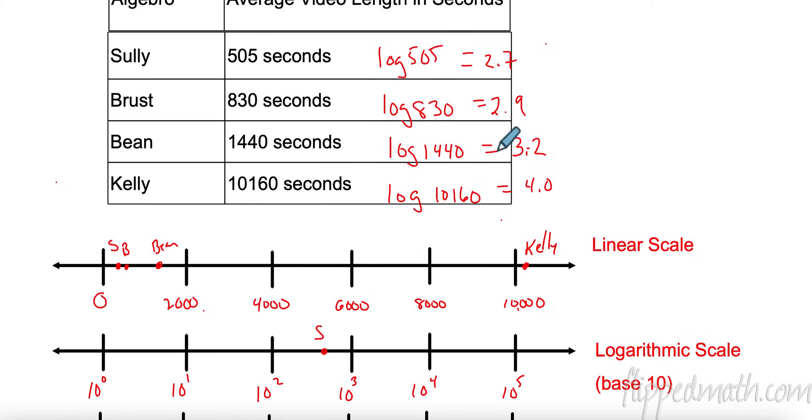Here we are. So log of 505 was 2.7. Brust was 2.9. That's here. I'm looking at the exponent. So 2 and 3, 2.7. 2.9 is here. Closer to 3. 3.2 for Bean. So this is 10 to the 3.2 is about here. That's Mr. Bean. And 4.0, Mr. Kelly is right here, because it's 10 to the 4th. So when I'm using the logarithmic scale, I'm looking at that exponent and finding where the value is. Now, you can see these are not as spread out as they were up here, right? Is this a great scale to use? Maybe. Maybe not. I don't know. They're still kind of close together, aren't they? That's what we need to do, though. We need to find a good scale.